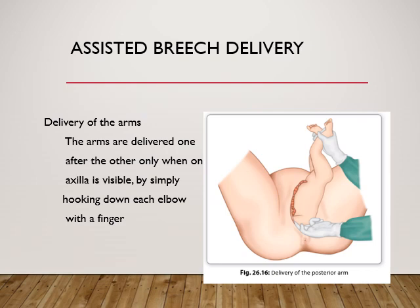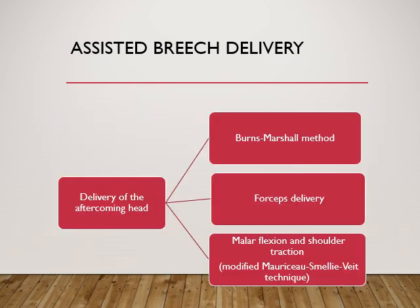Next, delivery of the arms: the arms are delivered one after the other, only when one axilla is visible, by simply hooking down each elbow with a finger. Then comes delivery of the aftercoming head, for which there are three methods: Burns Marshall method, forceps delivery, and Mauriceau-Smellie-Veit technique of malar flexion and shoulder traction.